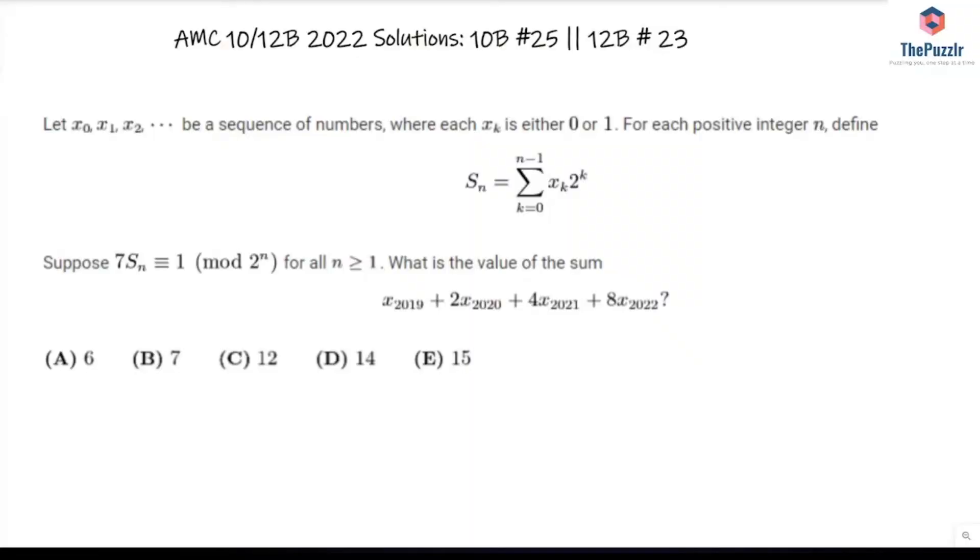Let x0, x1, x2 be a sequence of numbers where each xk is either 0 or 1. For each positive integer n we define the sum Sn equals xk times 2 to the power of k for k equals 0 to n minus 1. We're given that 7 times the sum S of n is congruent to 1 mod 2 to the power of n for all n is greater than or equal to 1. What is the value of this sum?